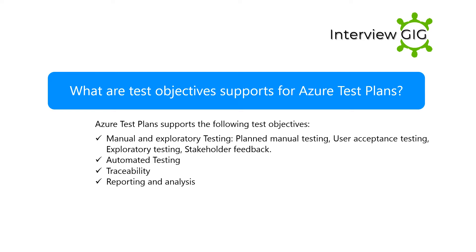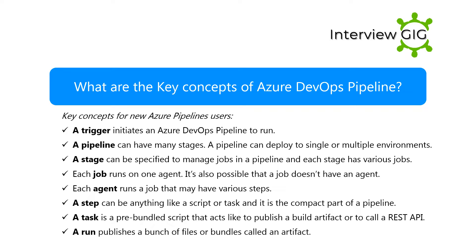Reporting and analysis. What are the key concepts of Azure DevOps Pipeline? Key concepts for new Azure Pipelines users: a trigger initiates an Azure DevOps Pipeline to run. A pipeline can have many stages and can deploy to single or multiple environments. A stage can be specified to manage jobs in a pipeline, and each stage has various jobs. Each job runs on one agent.